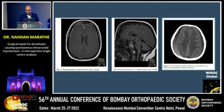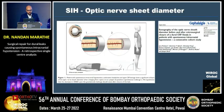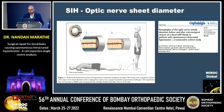As part two of the study, we will be assessing the post-operative MRIs of these patients and also performing optic nerve sheath diameter testing, because once the CSF leak is clipped, the optic nerve sheath diameter should increase — which was otherwise collapsed because of the intracranial hypotension. Thank you.